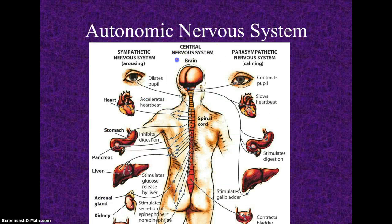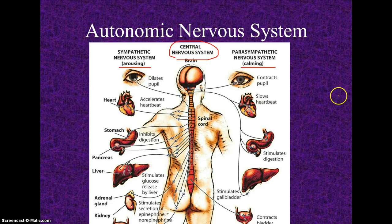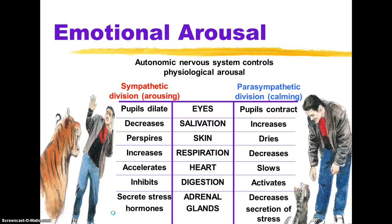What we really need to focus on in the central nervous system is the impacts of arousing versus calming. You can go through and see that there are several body systems that are impacted: pupils, heartbeats, etc. You should know those for the test. Here are the big ones — the eyes, salivation, skin, respiration, heart, digestion, and adrenal glands. You really should know these in terms of sympathetic and parasympathetic.